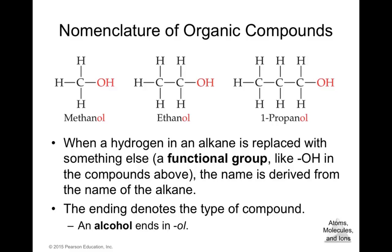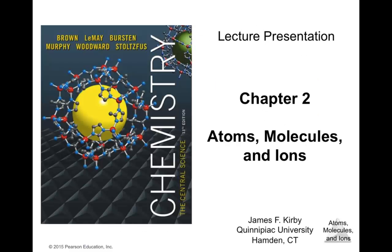This concludes the review of Chapter 2. We discussed Dalton's atomic theory, subatomic particles — remember to watch the video in D2L about the experiments that led to their discovery — chemical symbols, the periodic table, types of formulas, isotopes, atomic weight, and the nomenclature of ionic compounds, binary molecular compounds, and organic compounds. This is Chapter 2: Atoms, Molecules, and Ions.